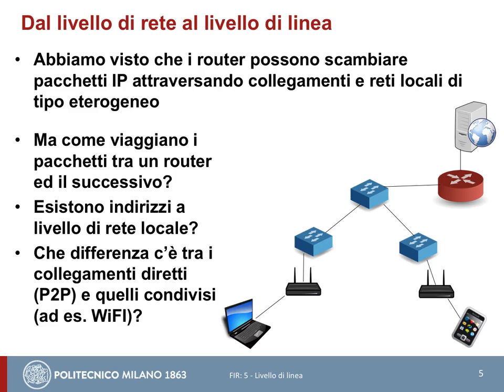Descrivere il livello di linea significa descrivere il processo per cui, una volta che la trama è stata forgiata — una volta che nella trama di livello 2 si conosce l'indirizzo MAC di sorgente e destinazione — descrivere il processo per cui questa trama fisicamente viene consegnata al destinatario. Quindi processo di consegna delle trame di livello 2 a valle del processo di inoltro IP, e descrizione di come queste trame sono fatte, cosa ci sta dentro, quali sono i servizi supportati dai protocolli che usano queste PDU di livello 2.